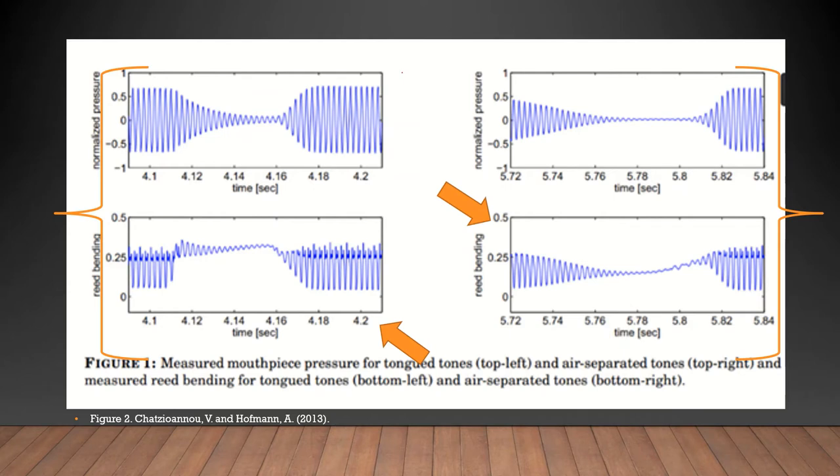This can inform single-reed musicians on when it may be appropriate to use tongued articulation versus air articulation. If wanting a crisper articulation with a quicker release, then one may find that use of the tongue would be more effective. If the speed of the release needs to be slower, as in a legato articulation, then air-separated articulation may be more effective. Of course, other musical variables like tempo and dynamics would need to be considered before choosing the appropriate approach. This will be discussed in the study next.